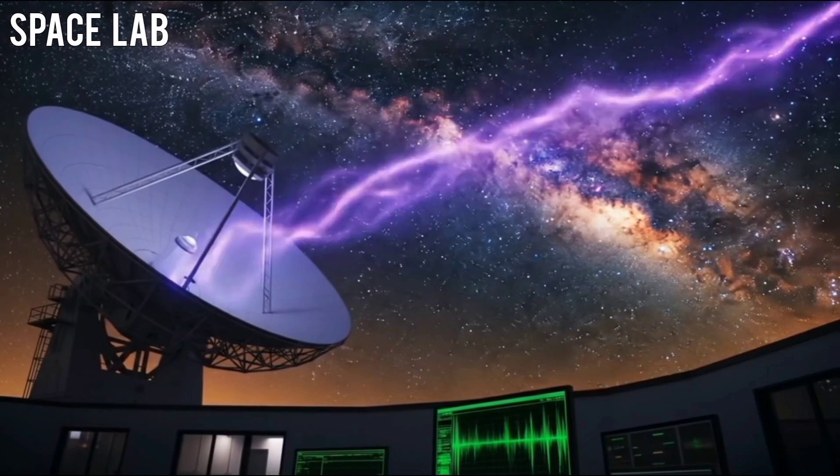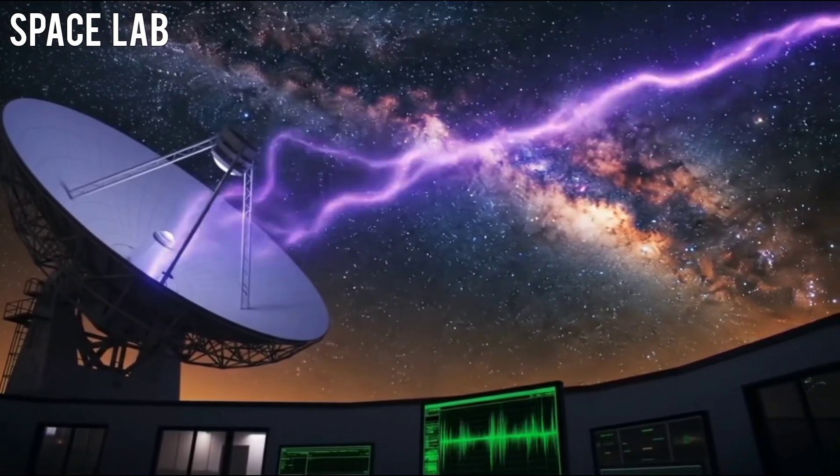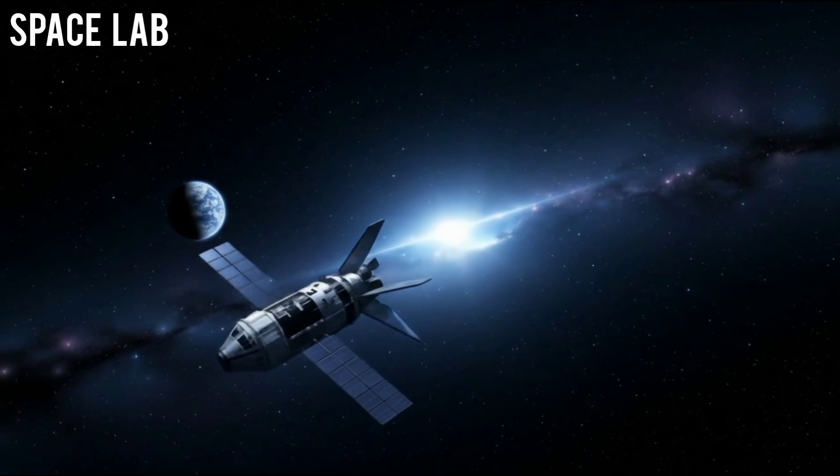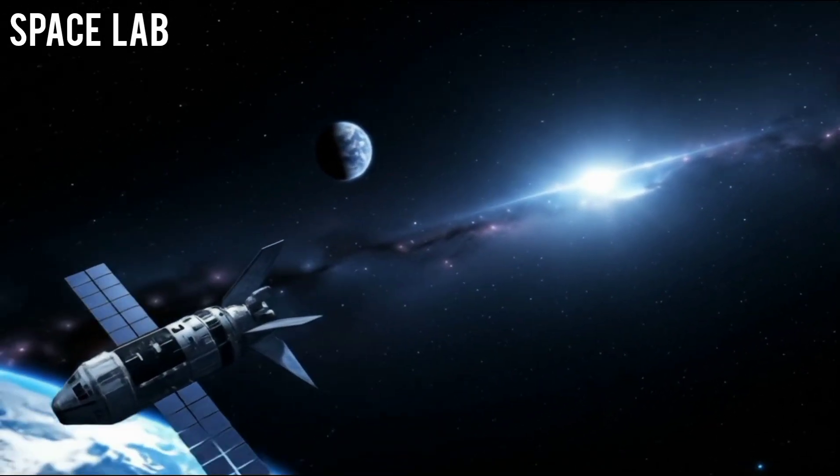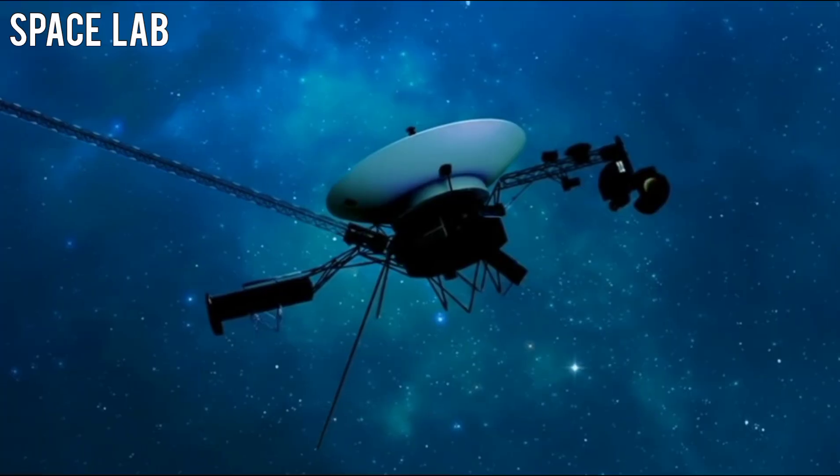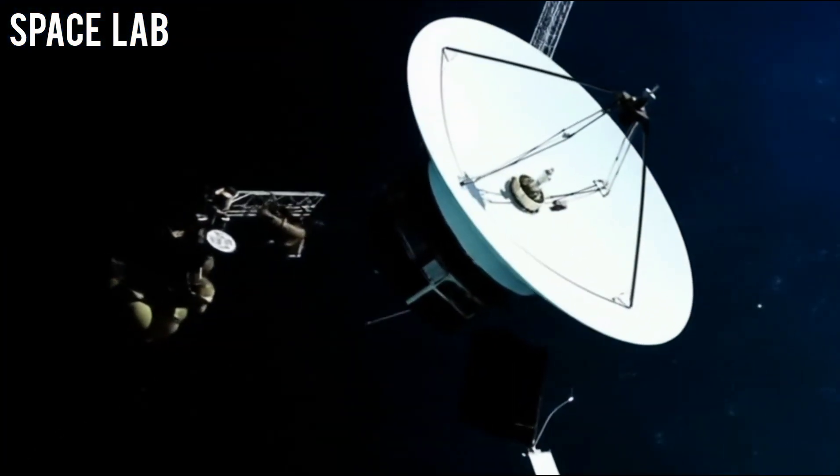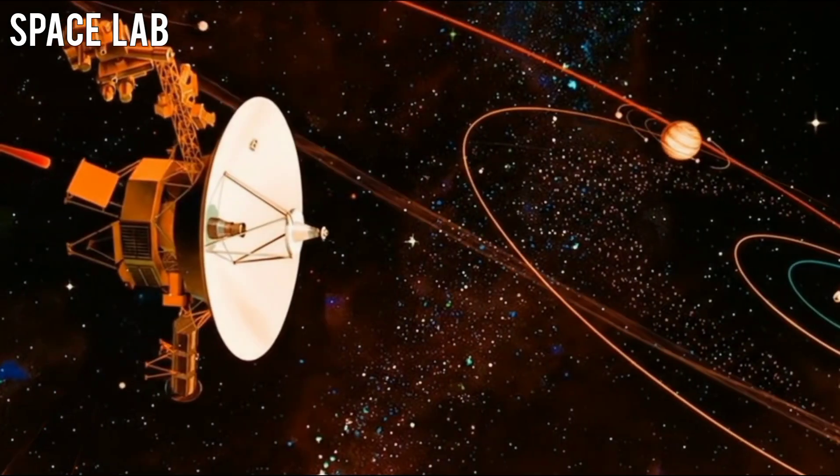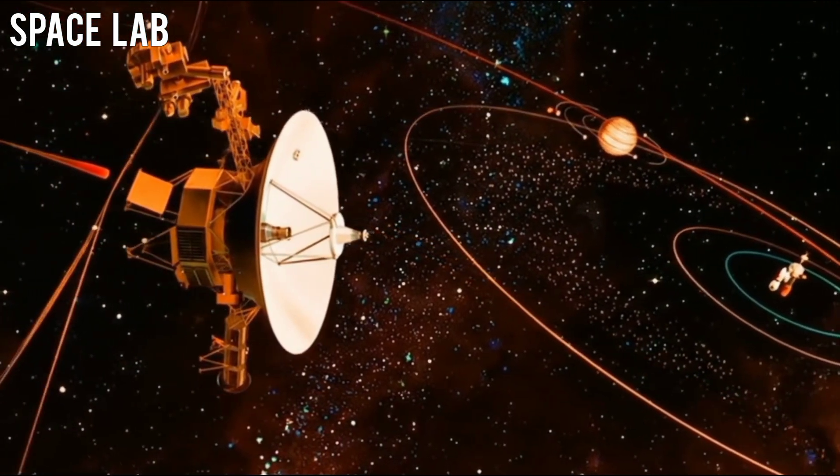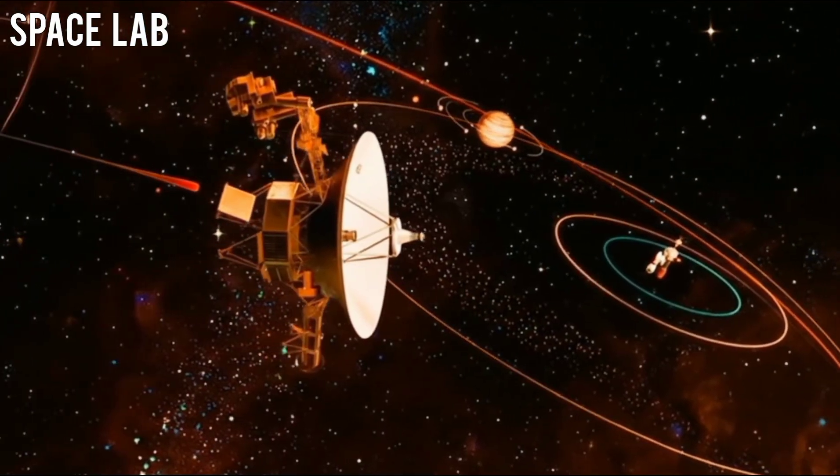But the road there isn't easy. Voyager systems are deteriorating. The spacecraft's thrusters have degraded after decades of operation. Its instruments require careful balancing to conserve power, and its signal is weakening with every passing year. At this rate, by the early 2030s, its generators will finally run out of energy. The thought haunts everyone who has ever worked on the mission that Voyager 1 might go silent just before reaching its greatest destination.